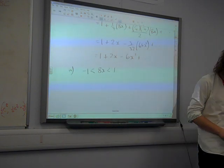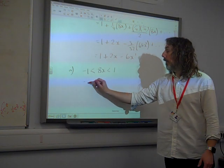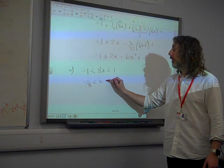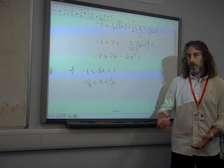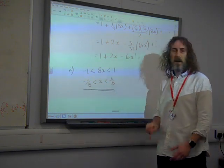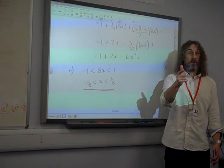It's a strict inequality, it's not an or equal to. So, we get minus an 8th to an 8th, which, of course, you could write with the modular sign if you wanted to. You could do it either way. There you go, that's the mark. Great. And that's the first question.